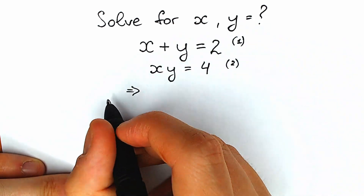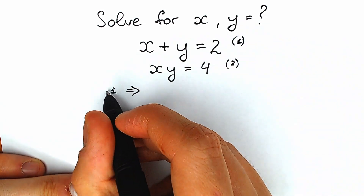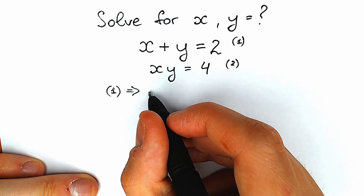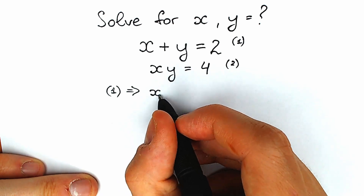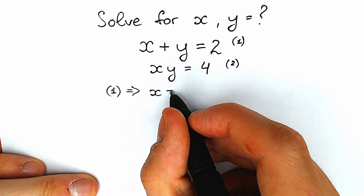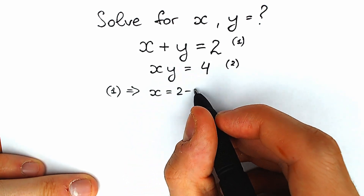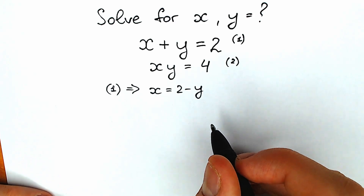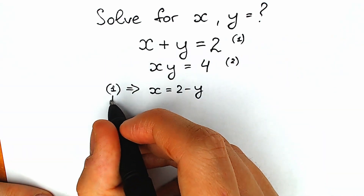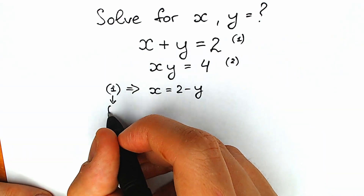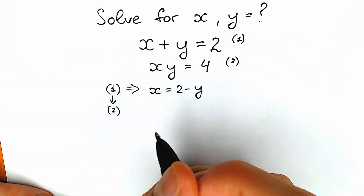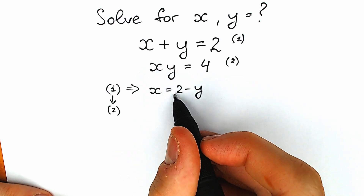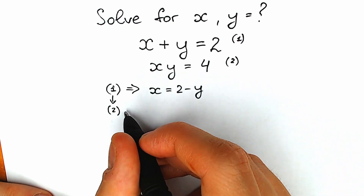So our first step: from the first equation we have x equals 2 minus y. Now let's plug this expression from the first equation into the second one. As a result, instead of x, we'll have 2 minus y, times y.